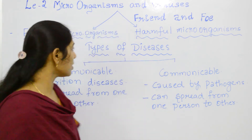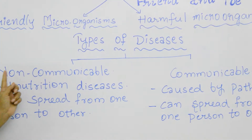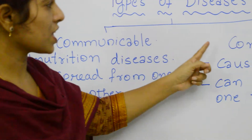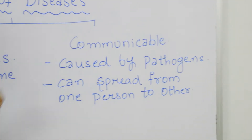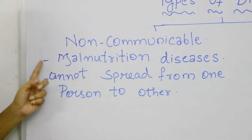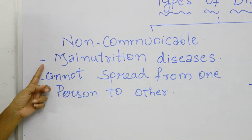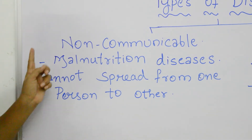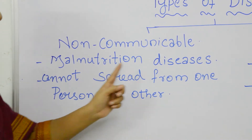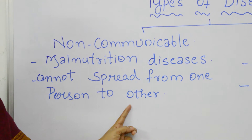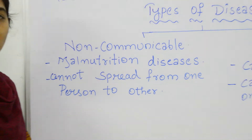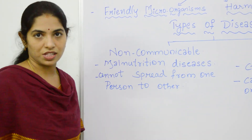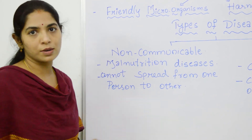Now we will see what are the different types of diseases. There are two different types: non-communicable diseases and communicable diseases. Non-communicable diseases mostly include malnutrition diseases. As the name itself says, these diseases cannot be spread from one person to another. For example, night-blindness is mainly caused due to deficiency of vitamin A — it is a malnutrition disease and cannot spread from one person to another.